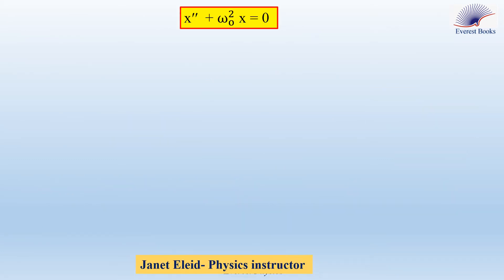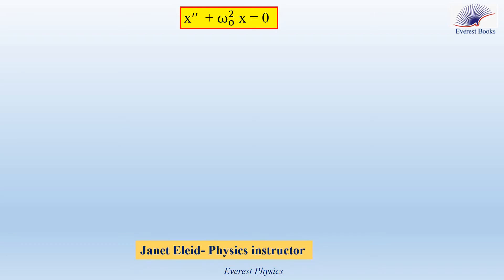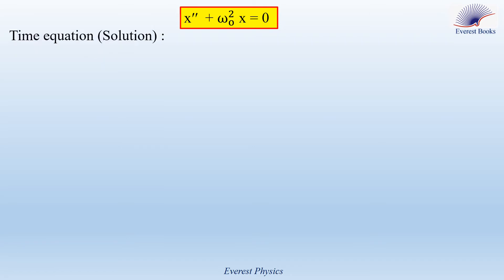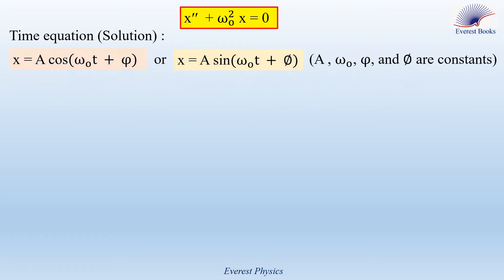In the last video, we obtained the second-order differential equation that governs the simple harmonic motion of a horizontal elastic pendulum. The solution or the time equation of this differential equation is: x equals A cosine(omega 0 t + phi), or x equals A sine(omega 0 t + phi), where A, omega 0, and phi are constants.